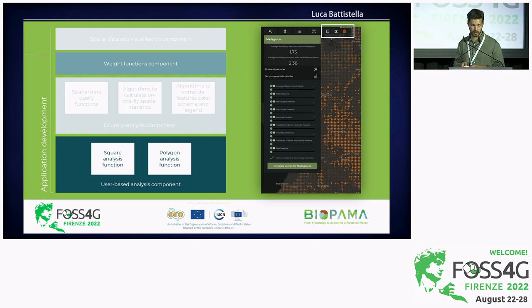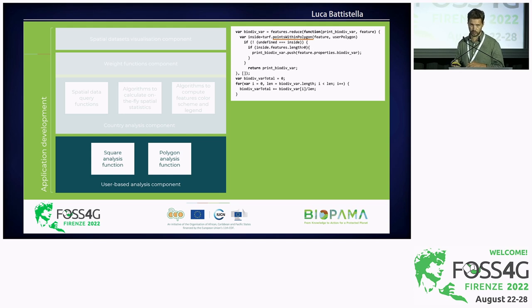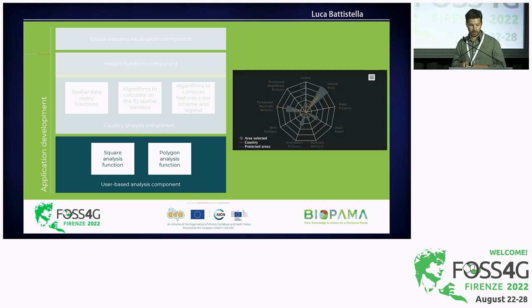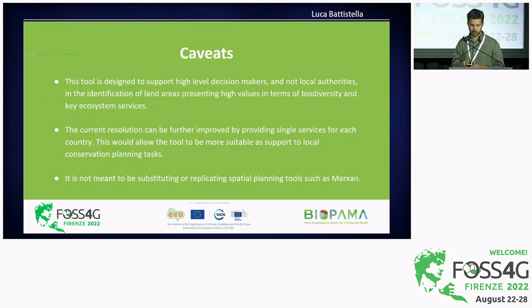You can perform spatial analysis by drawing polygons with infinite arcs and nodes, or simply a square if needed. That's based on Turf. The stack is Postgres, GeoServer, vector tiles, MapboxGL, and Turf for conducting spatial analysis and statistics. We use points-within-polygon for extracting information below the polygon the user draws. The information from that function feeds a radar plot where you can compare biodiversity and ecosystem services values between protected areas in a country overall and the area you have selected.